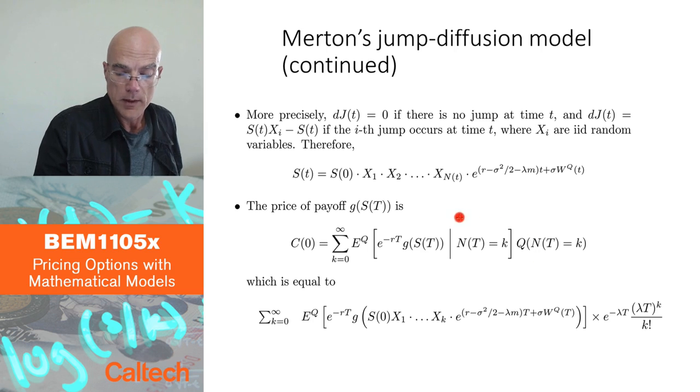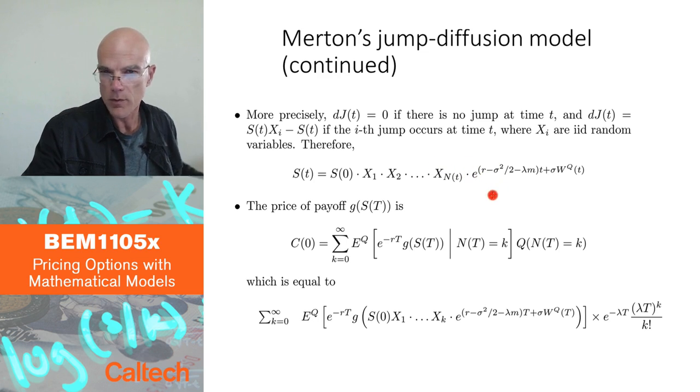But why does this help? Because now, once you know the number of jumps, you know there's going to be a k here. You know exactly how your stock price looks like. In particular, if these guys' X's are also exponentials of Brownian normal distribution, then you just have multiplication of exponentials of Brownian normal distributions, which is going to be an exponential or normal distribution. And you can actually compute, if you can compute in Black-Scholes Merton, without jumps, you can compute here too.